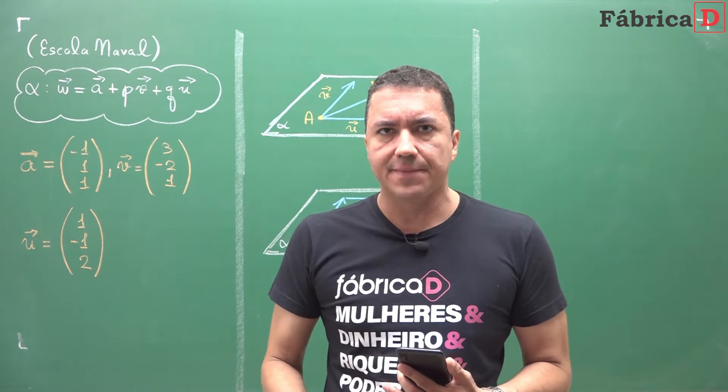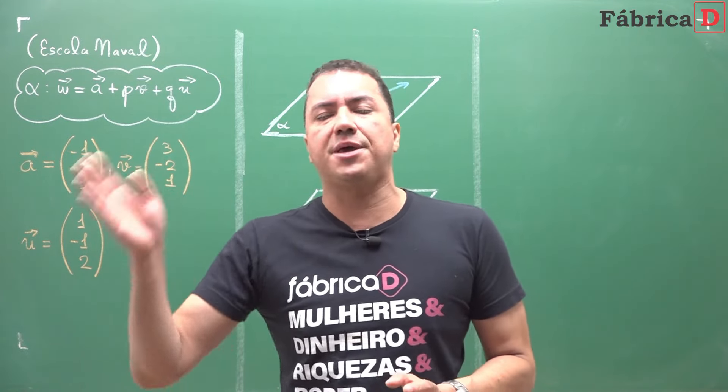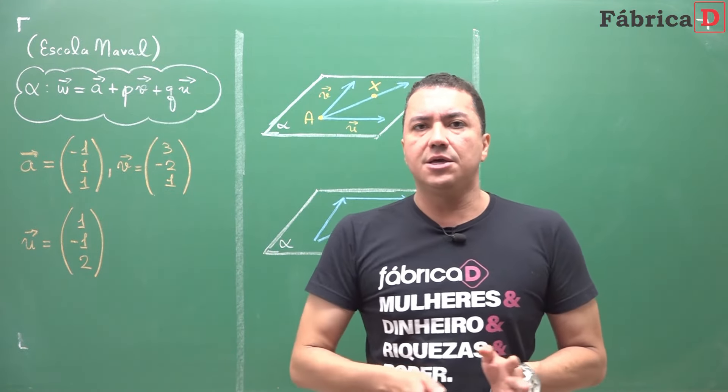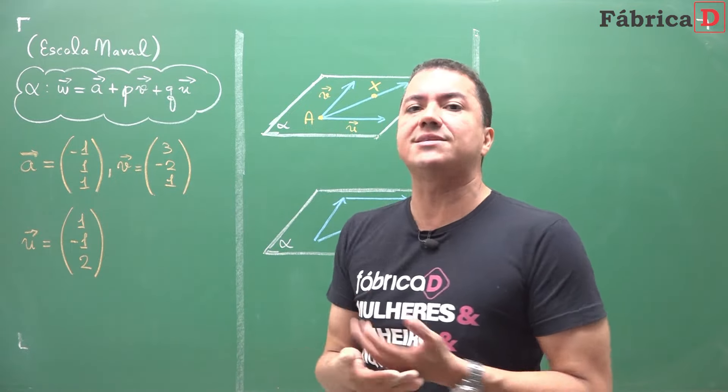He says: let the plane alpha have the equation W — which is a vector — equal to A plus PV plus QU, with P and Q belonging to the reals, with the given coordinates of A, V, and U. He asks for the volume of the tetrahedron with vertices at the origin and at the intersections of alpha with the coordinate axes. The first part of the question is to understand this notation because you are more accustomed to AX plus BY plus CZ plus D equals zero.